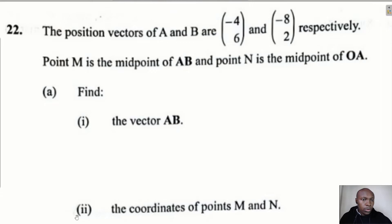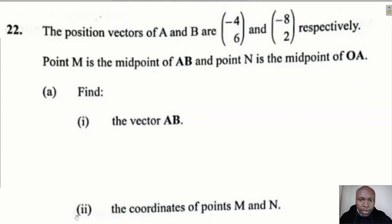Question 22: The position vectors of A and B are (-4, 6) and (-8, 2) respectively. Point M is the midpoint of AB and point N is the midpoint of OA. Part A of the question: find vector AB. We'll go through this question step by step.